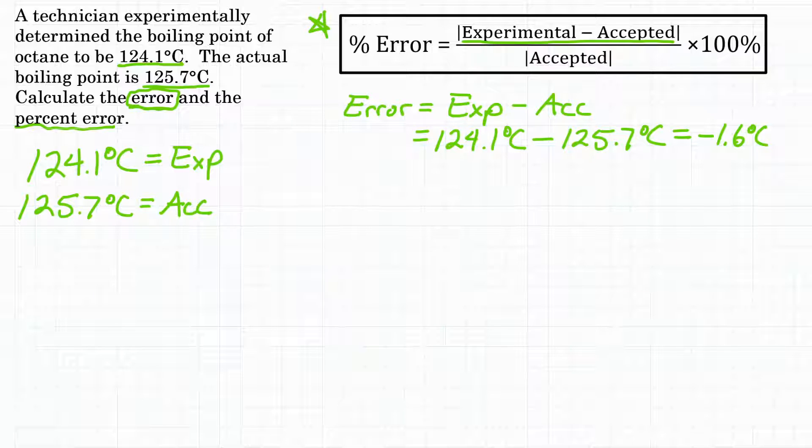So that's saying that our 124.1 degrees C that we got in lab is 1.6 degrees C less because it's negative from what the actual value is because it's actually 125.7. So our error here is negative 1.6 degrees C.